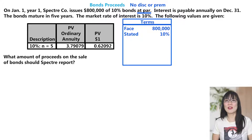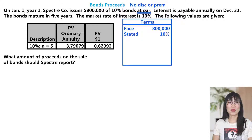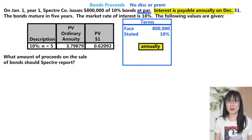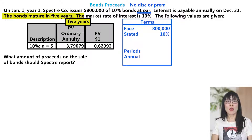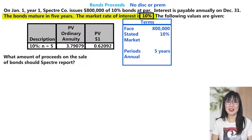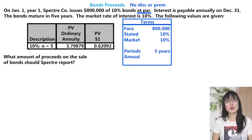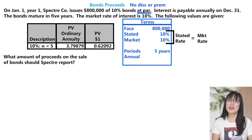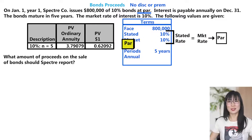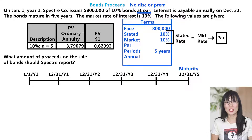Interest is payable annually on December 31st, the bonds mature in five years, and the market rate of interest is 10%. Notice here that the stated rate and the market rate are the same — when that happens, the bonds are issued at par. That confirms the prompt. Specter issues the bonds on January 1, Year 1.